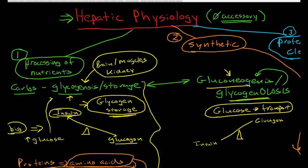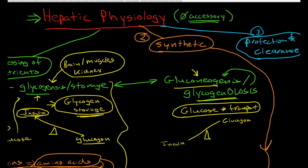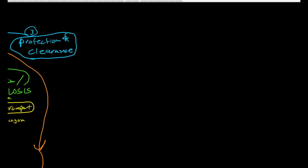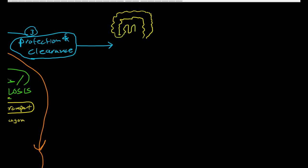We've talked about the processing of nutrients — including proteins, fats, and carbohydrates — and the synthetic function of the liver. The third thing is the role of the liver in protection and clearance. The portal vein is the vein draining the entire GI system, including the colon, small bowel, stomach, and distal esophagus. The GI tract — particularly the colon — is full of bacteria, and the gut is pretty good at keeping bacteria out of the blood, but it's not perfect; some slip through.